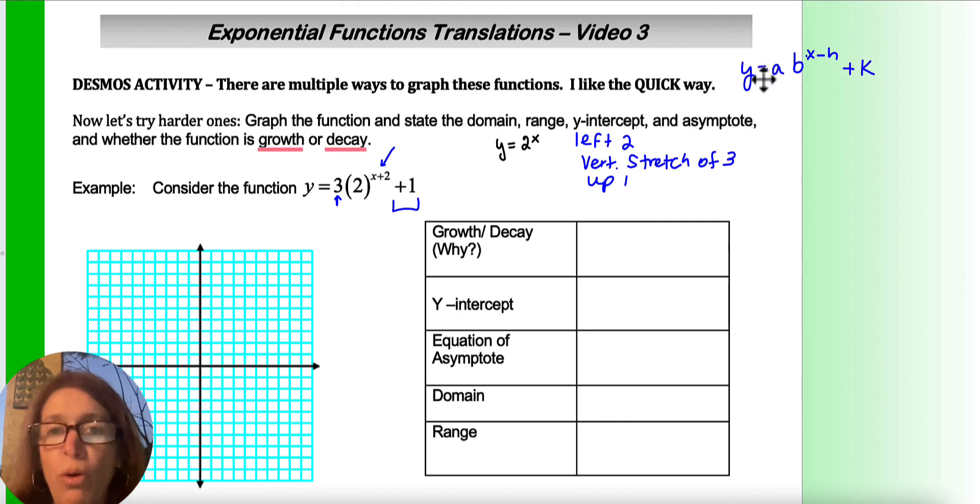So you could certainly write a rule, get your points on the parent graph, and then shift it. This would be inside changes x, so it would be x minus 2, and then 3y plus 1. So the rule would be x minus 2, 3y plus 1. You could certainly do that.